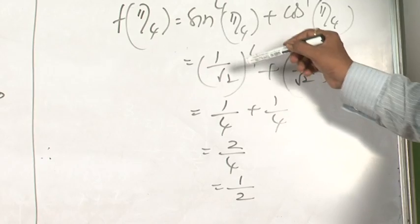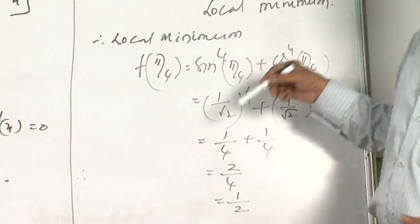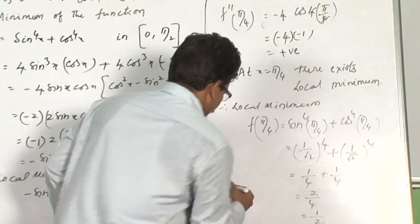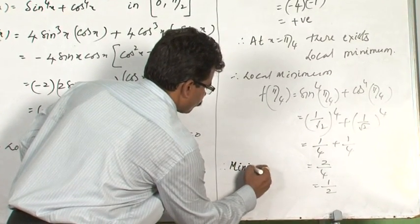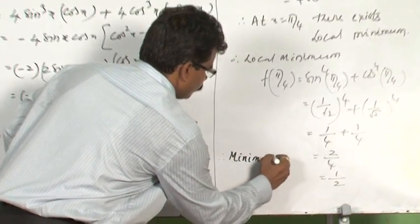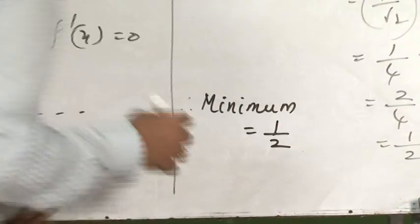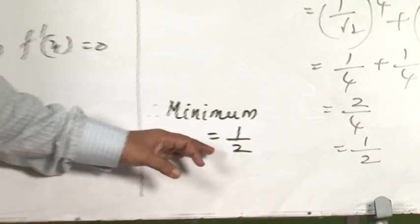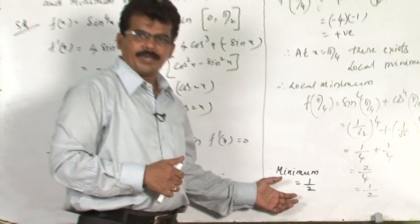That means for this function only a local minimum exists; there is no question of maximum. Therefore, the minimum value is equal to 1/2. Only minimum exists for this function, that is 1/2. The local minimum is nothing but the minimum.